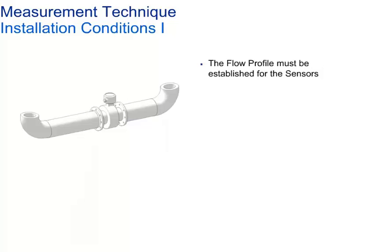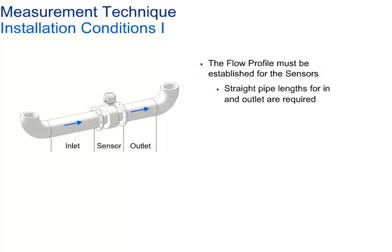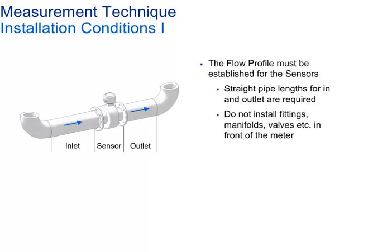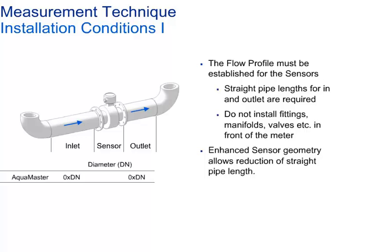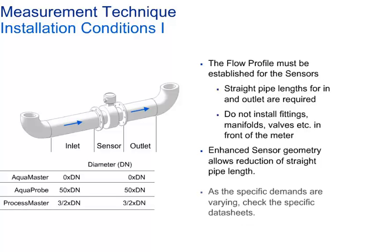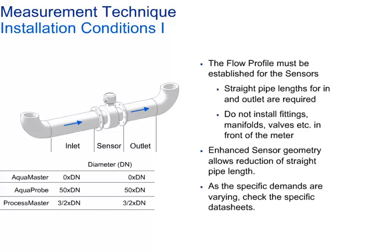The distribution of flow in different areas of the pipe should ideally be consistent. This distribution, known as a flow profile, is conditioned either by defined inlet and outlet straight pipe lengths or by using a special internal geometry for the sensor design. Do not install fittings, manifolds, valves, etc. in front of the meter tube, as they disturb the flow profile. ABB offers full bore, reduced bore, or octagonal sensor designs. Straight pipe length requirements range from 0×DN for the AquaMaster MMGA up to 50×DN for the AquaProbe. The ProcessMaster, for example, requires 3×DN upstream or 2×DN downstream.